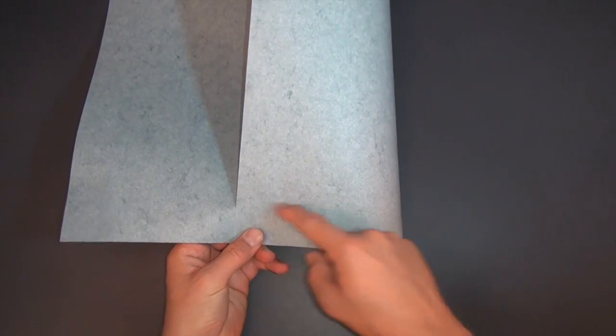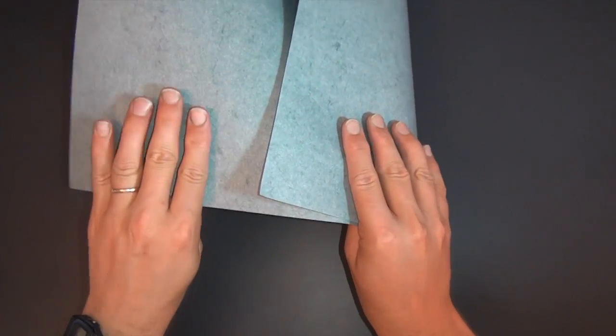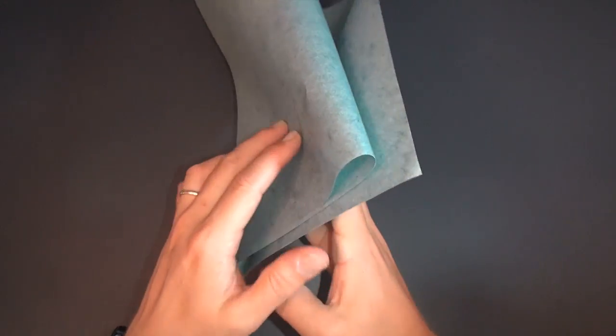So let's fold this edge over and estimate the half mark right here. And now fold this part behind like that.